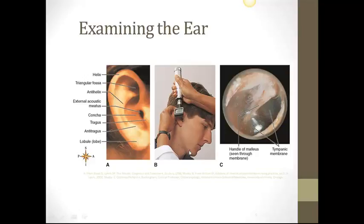In B, you see a practitioner using an otoscope to look into the inside of the ear. When we use an otoscope, we will see the tympanic membrane, which is seen here in C. The tympanic membrane, under normal circumstances, is a pearl gray color. We can oftentimes see the malleus, which is in the middle ear, which can sometimes be seen through the tympanic membrane — you can see the handle of the malleus.